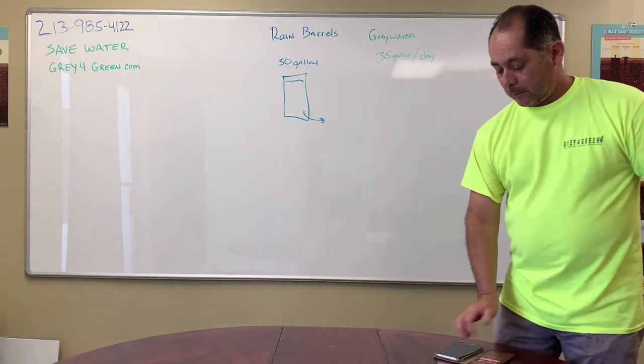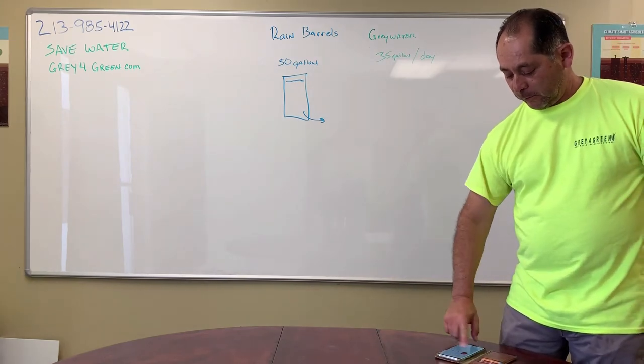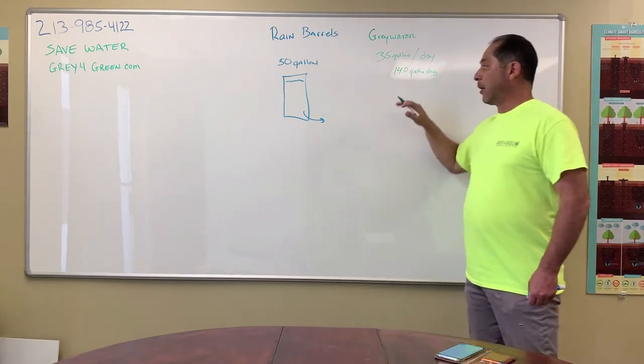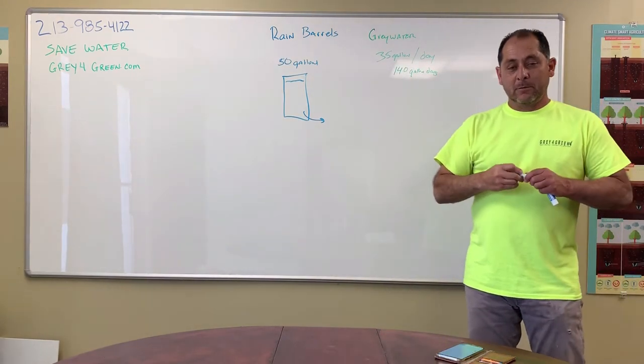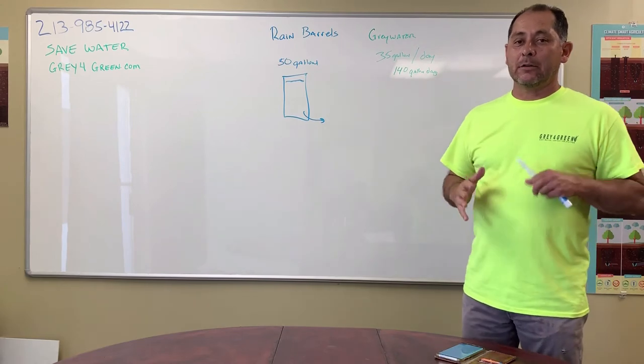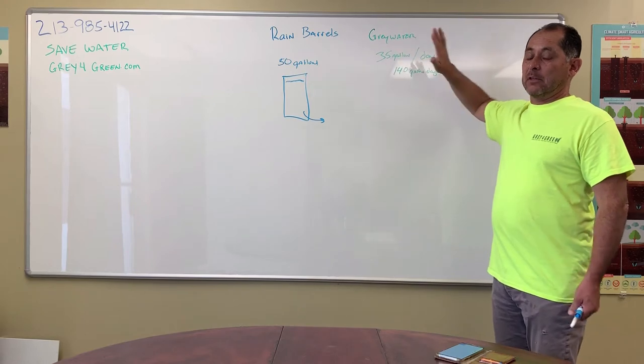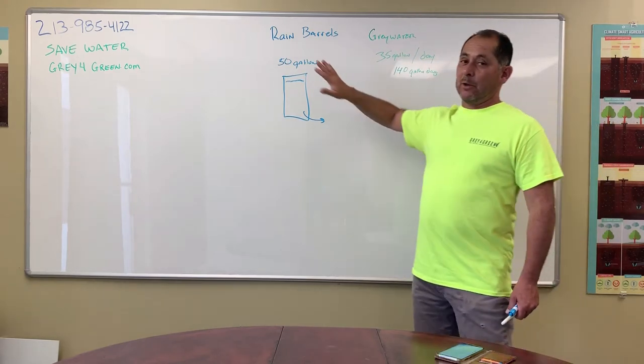So let me see what that is for a family of four. That's 140 gallons. So you can automatically see that by using gray water, you're going to have a lot more water put on your landscape to keep it green than you do with rain barrels.